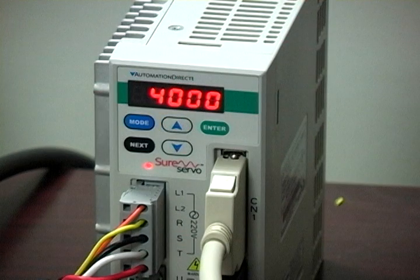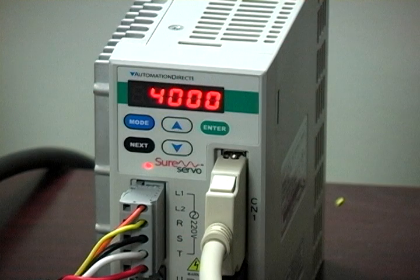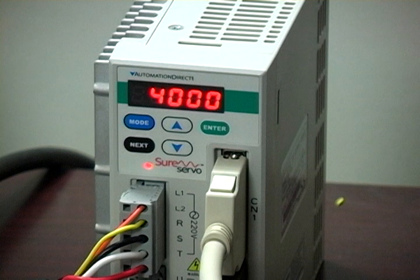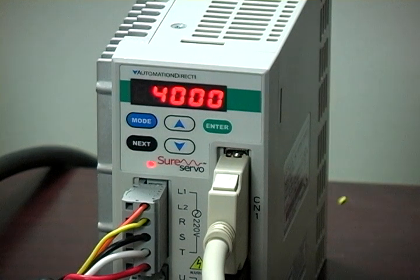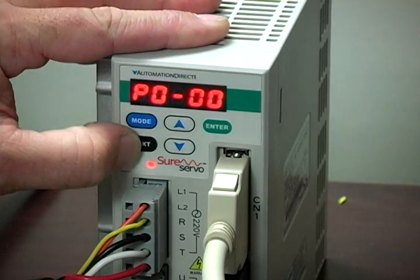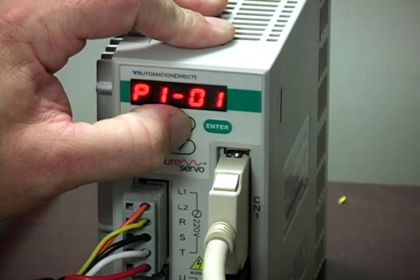Let's take a look at a couple of additional functions. We've programmed the system for eight relative or incremental moves. What about absolute mode? Let's set P133 back to zero for absolute position mode.